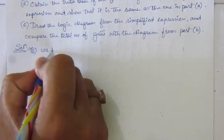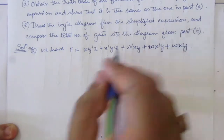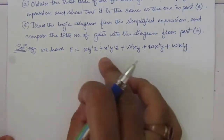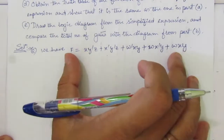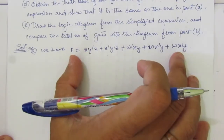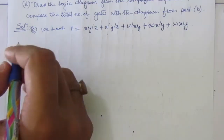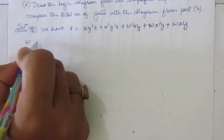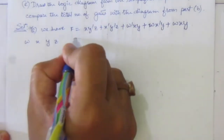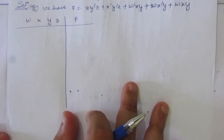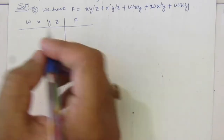The first part of the problem is to obtain the truth table of the function f. We have the function f, and here we have four input variables w, x, y, and z as the output function f. For four input variables, we will have 16 input combinations.